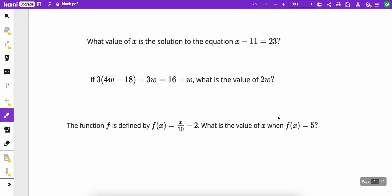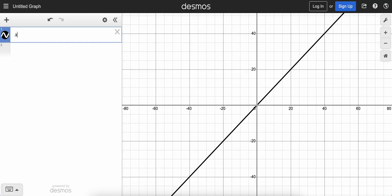For example, the first one here, really simple, but Desmos can still do it for us. If we don't want to solve this equation, x minus 11 equals 23, we can just pop over to Desmos and type it in.